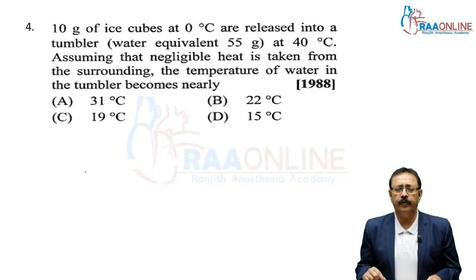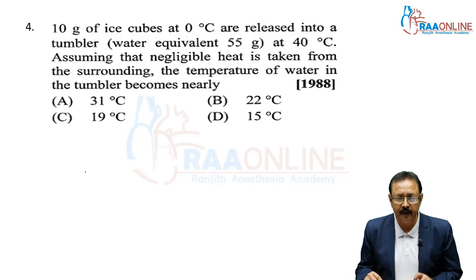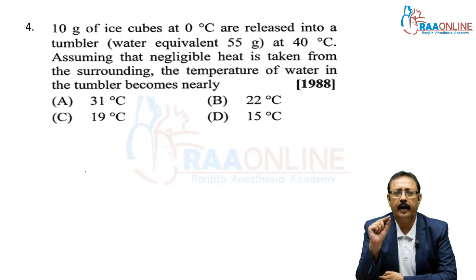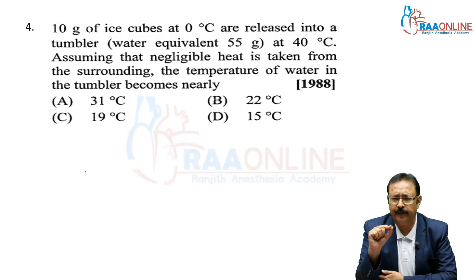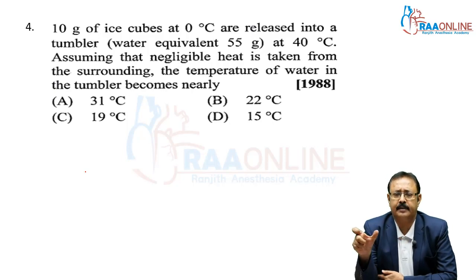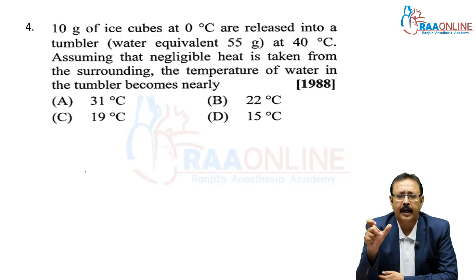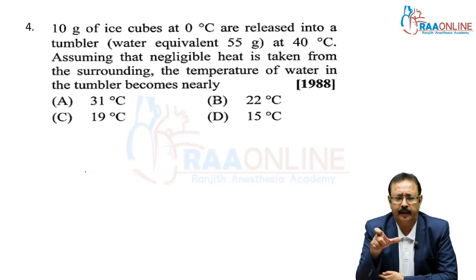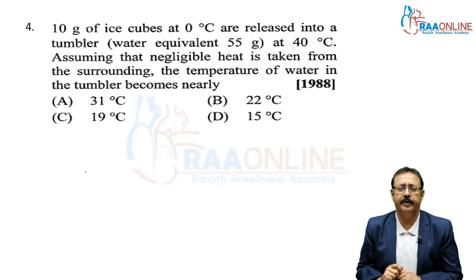Next is the fourth problem from your crash course, Unit 5, from AIPMT 1988. Ten grams of ice at 0 degrees centigrade are released into a tumbler whose water equivalent is 55 grams. Assuming negligible heat is taken from the surroundings, the temperature of water in the tumbler becomes nearly — we will use the principle of calorimetry.